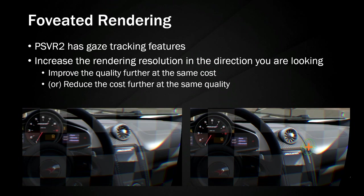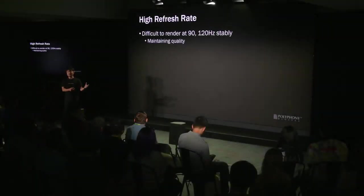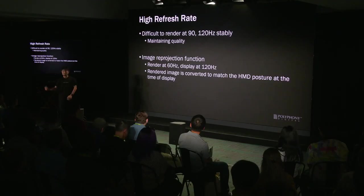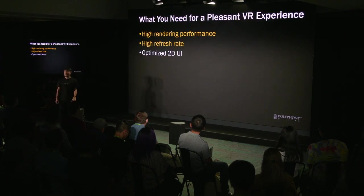Another issue is how to achieve a high refresh rate. Rendering at refresh rates such as 90Hz or 120Hz while maintaining quality was difficult due to load constraints. This is why the reprojection function is used — this function renders at 60Hz and displays the screen at 120Hz. The rendering results are converted and displayed according to the posture of the head-mounted display at the time of display. In general, object motion blur remains, but this is relatively harmless in racing games. By using these features, we achieved high rendering performance and high refresh rates.